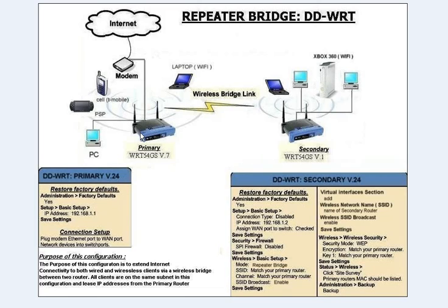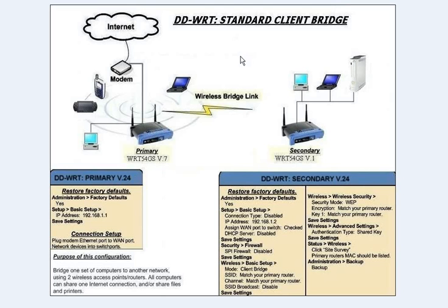The first router also has a laptop, T-Mobile cell phone, and a PSP connected wirelessly, and a personal computer connected wired. What we're going to do is first set up a standard client bridge, which means the second router only has connections via a wired connection — no wireless connections at all. The reason we do this first is because if we attempt the repeater bridge first, you usually won't be successful. So we'll set up the standard client bridge, then change it to a repeater bridge.